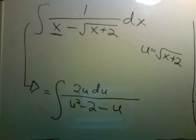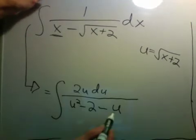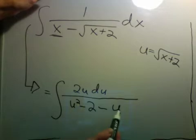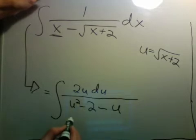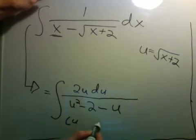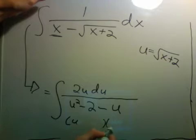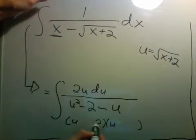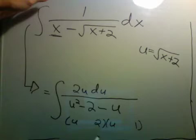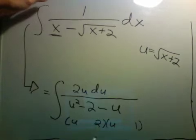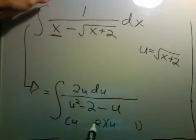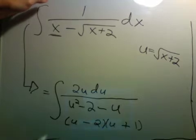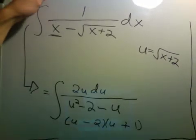Maybe just for one more example, we might as well go through it. To start, we have to factor the bottom — this is u squared minus u minus 2. To factor this, I'll put a 2 there and a 1 there. And to get a negative 1, I'll have to subtract and add. So that's what the bottom looks like.